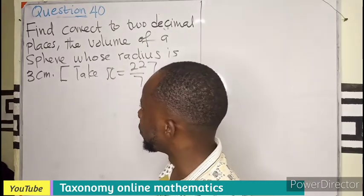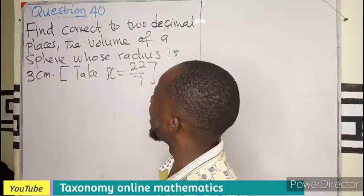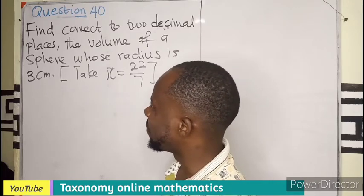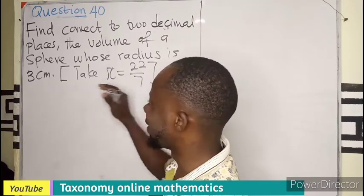The first one is on mensuration, that is find correct to 2 decimal places the volume of a sphere whose radius is 3 cm.